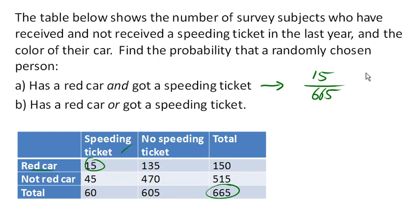Now, these are dependent events, and so we really have to work off the table. It would not be correct to find the probability of having a red car and the probability of speeding and just multiply them.